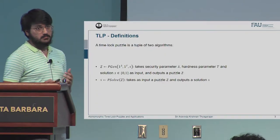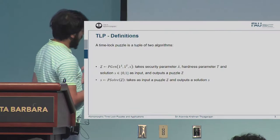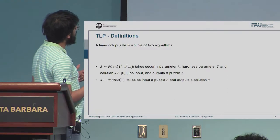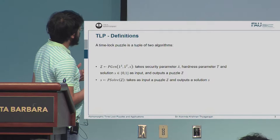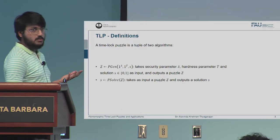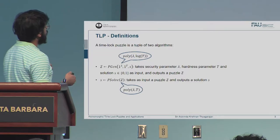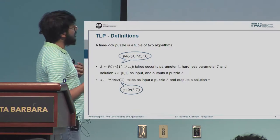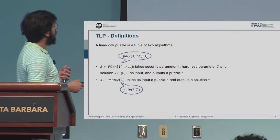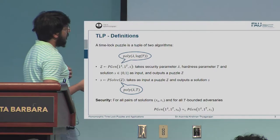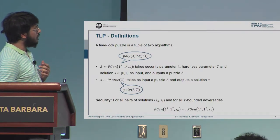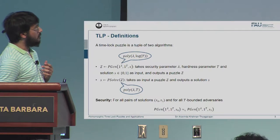Let me introduce some formalism for the primitive. We have two algorithms: the first is the puzzle generation that takes the solution, the security parameter, and the timing hardness as input, and outputs the puzzle. There's the solve algorithm that takes the puzzle and eventually outputs the solution embedded in it. As efficiency, we require the puzzle generation to run in poly log T, while the solving algorithm has to run in poly T. The security requirement is that for any depth-T-bounded adversary, a puzzle generated with solution S0 is indistinguishable from a puzzle generated with solution S1.